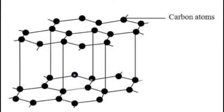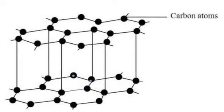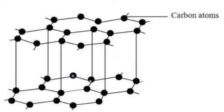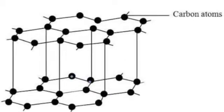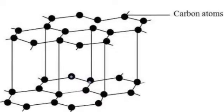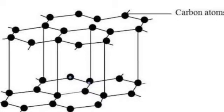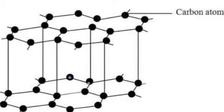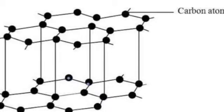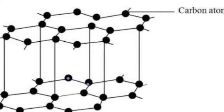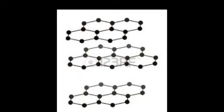If you want to see graphite and electricity, it will be easy to connect. When you connect with graphite, you can connect through a carbon atom. It will have a valence electron. In the valence electron, you can connect with free space, and you can connect the electricity.